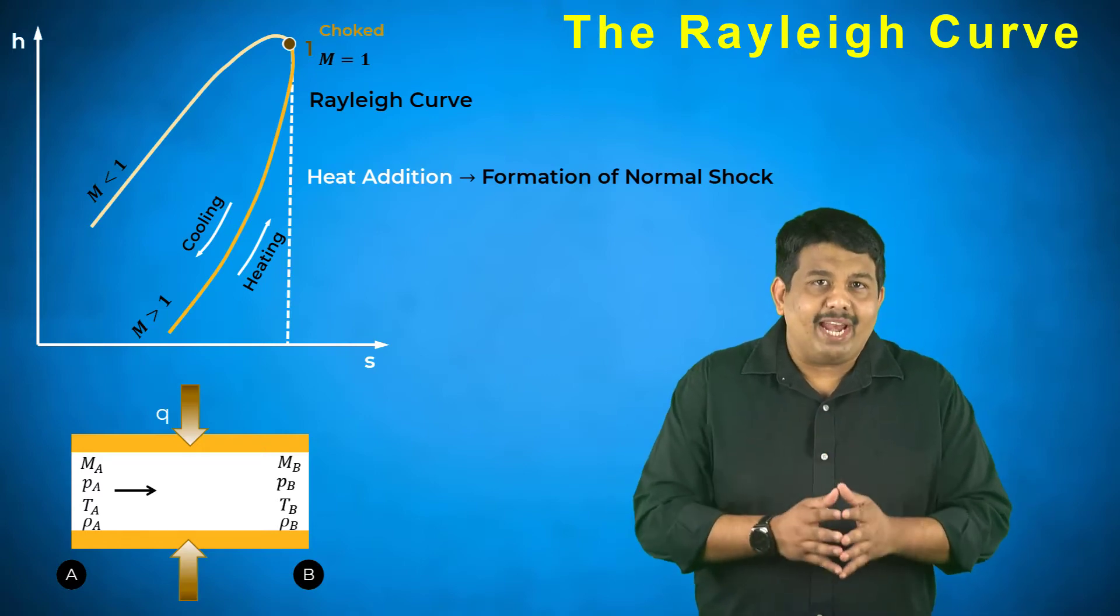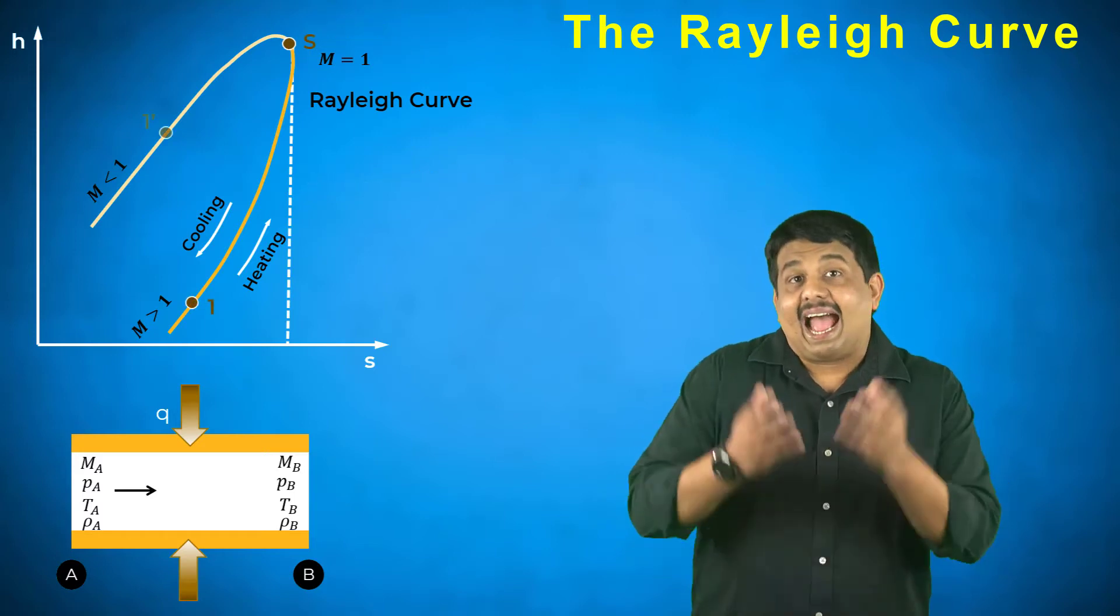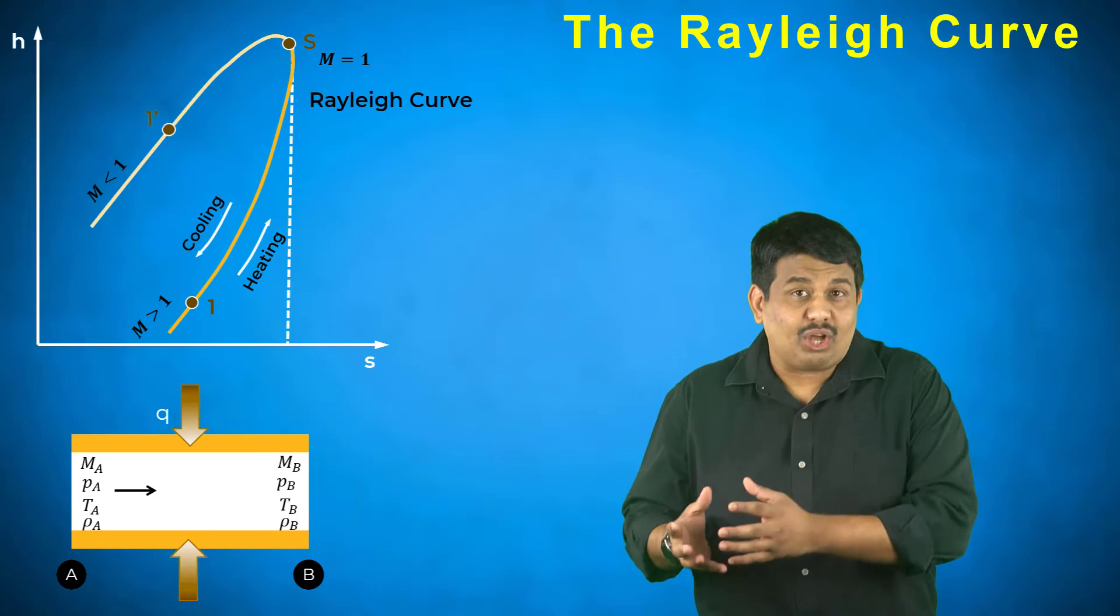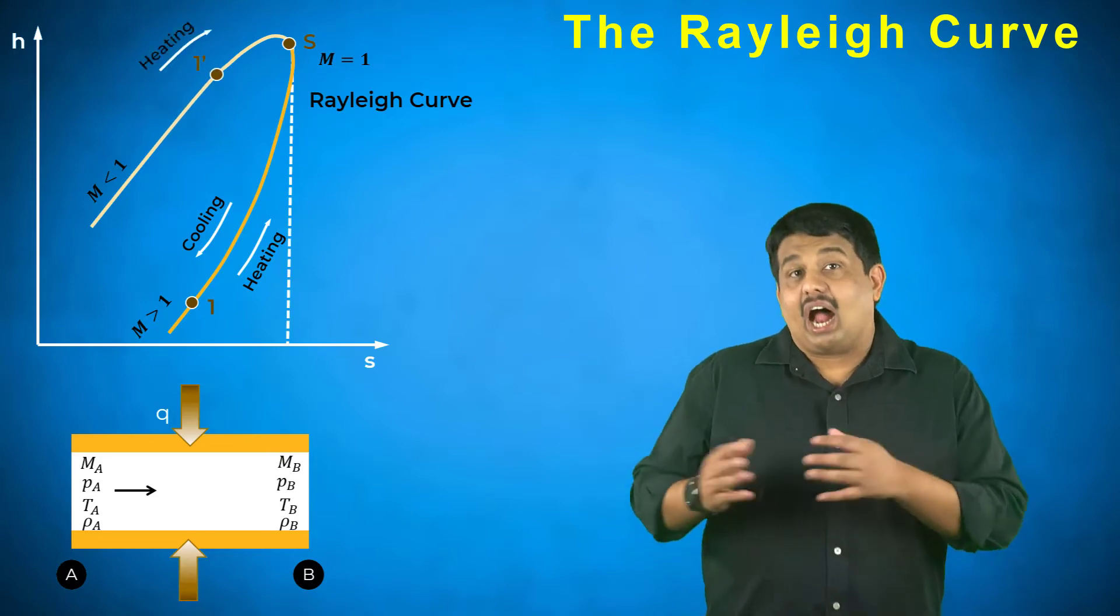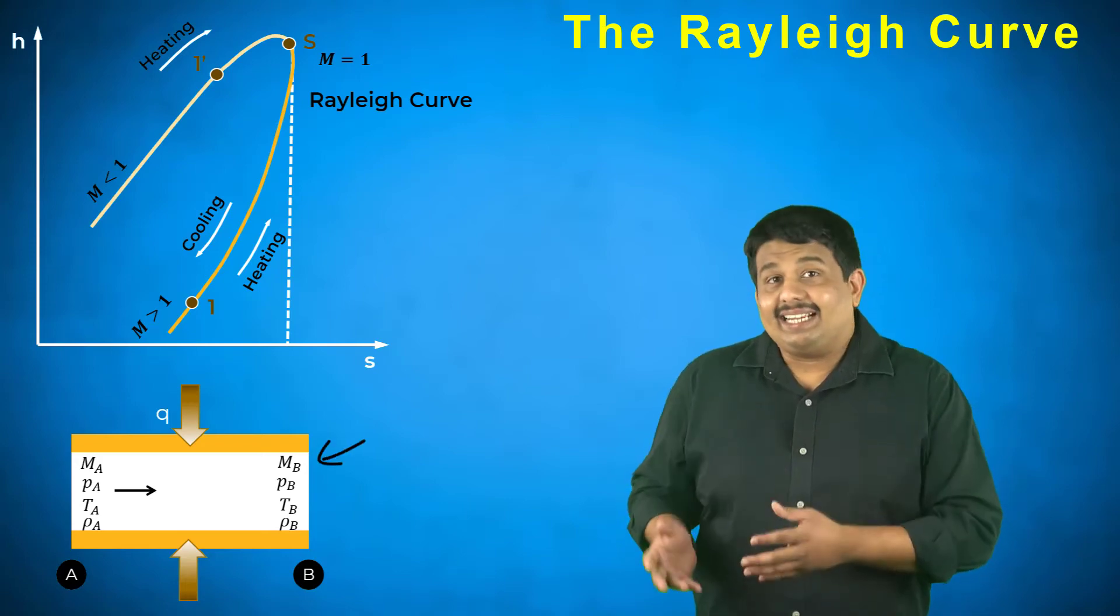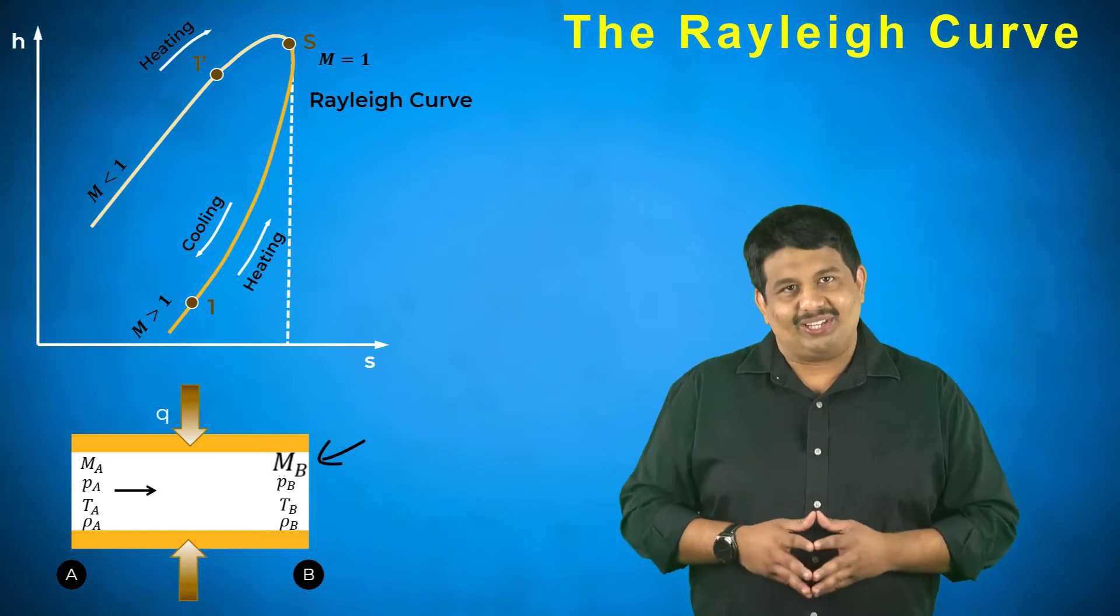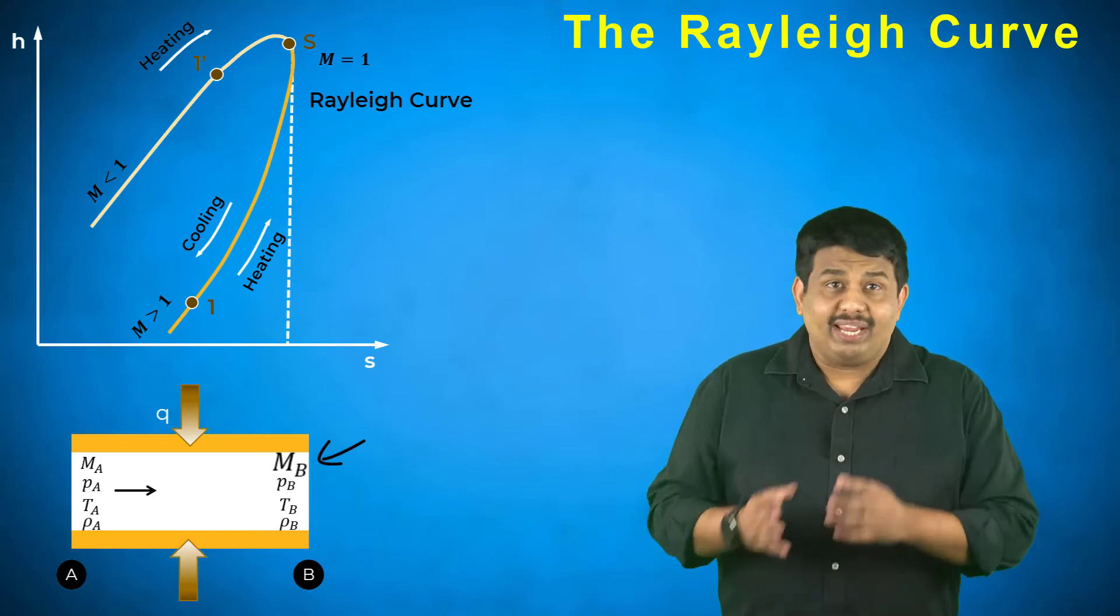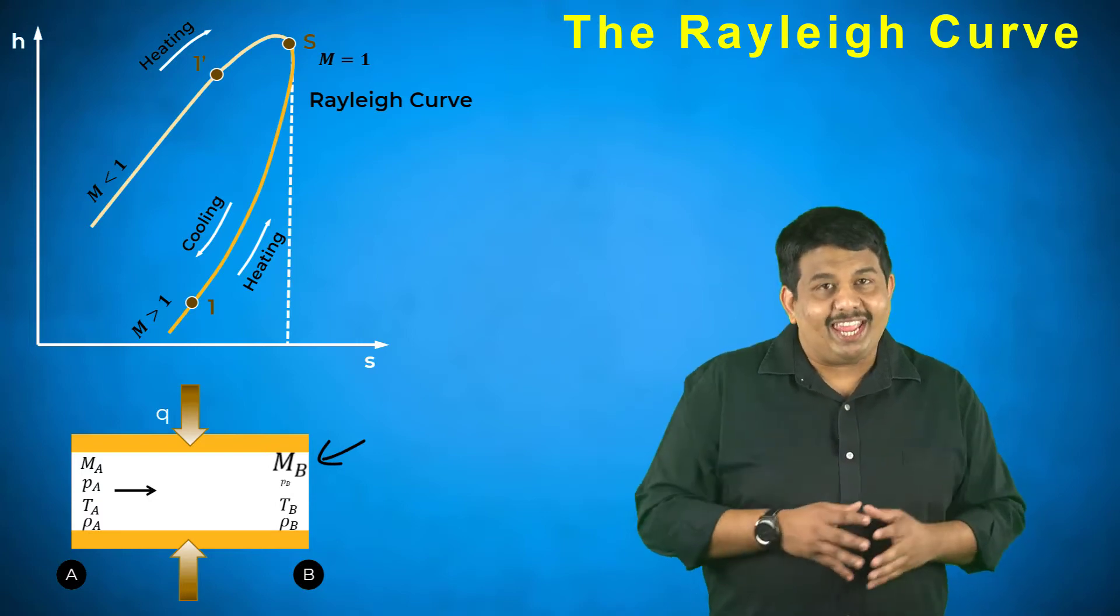Similar observations are made on the upper branch of the Rayleigh curve. As heat is added to the subsonic flow, the flow accelerates in region B until it reaches the point S. Heat addition to subsonic flows leads to an increase in the fluid velocity. The pressure in region B decreases compared to that of region A.